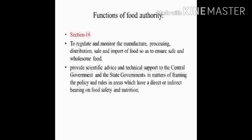Next are the functions of the food authority, explained in section 16. The important functions include to regulate and monitor the manufacture, processing, distribution, sale and import of food so as to ensure safe and wholesome food. The food authority also provides scientific advice and technical support to the central government and state governments in matters of framing policy and rules in areas which have direct or indirect bearing on food safety and nutrition.